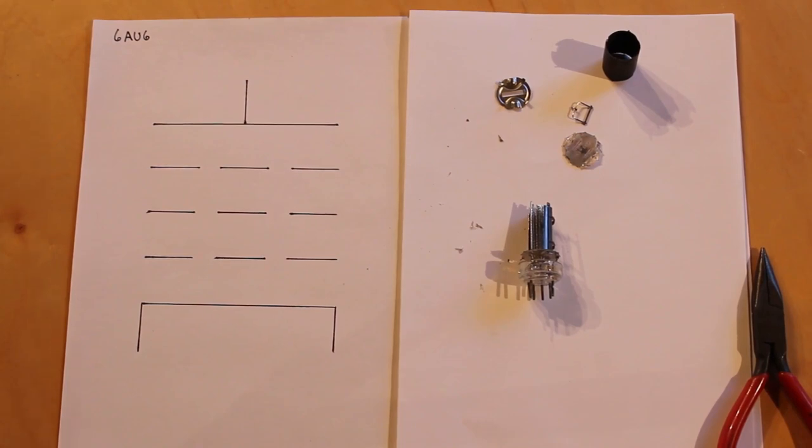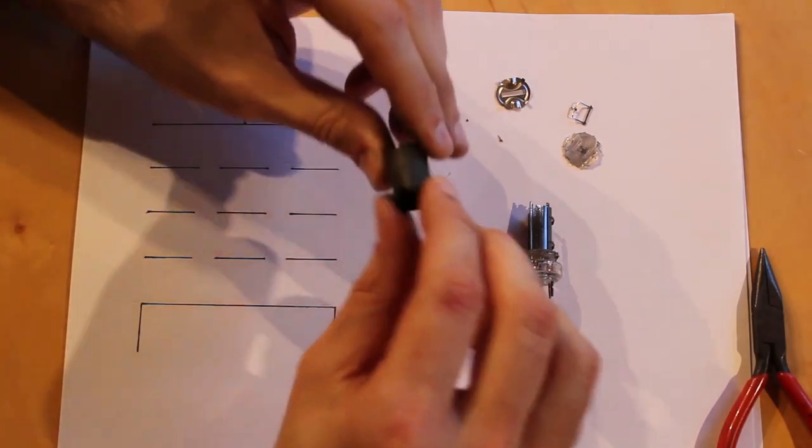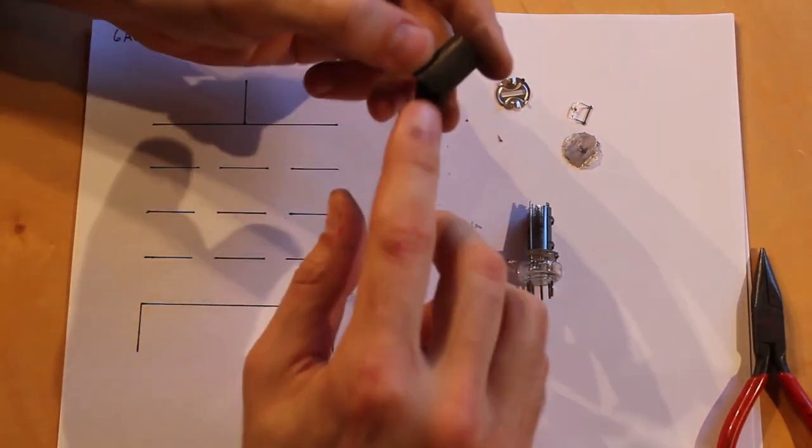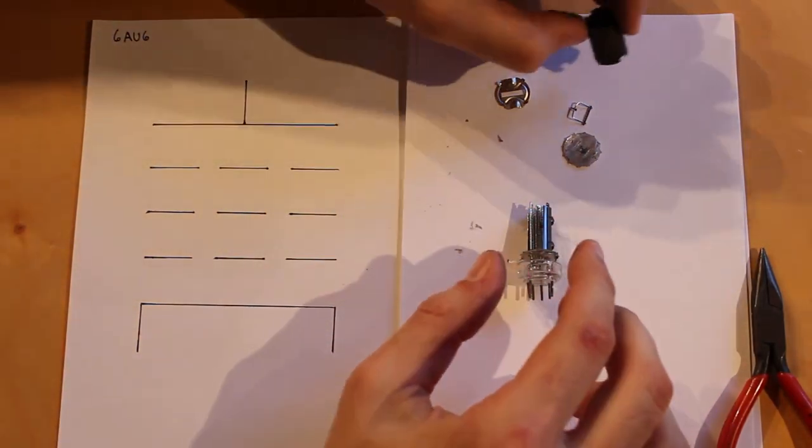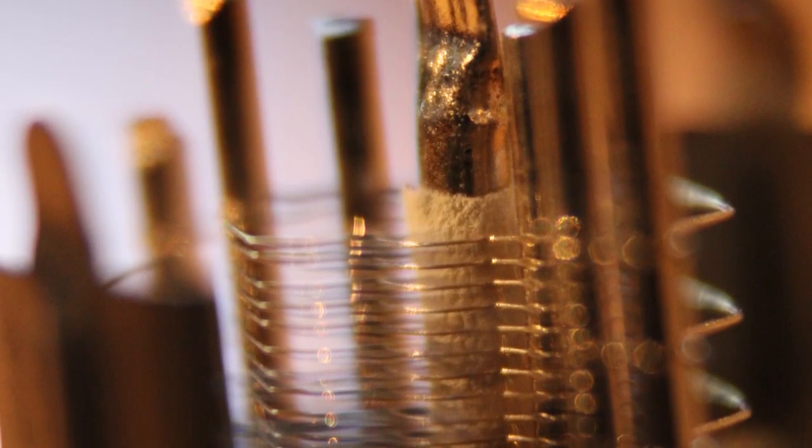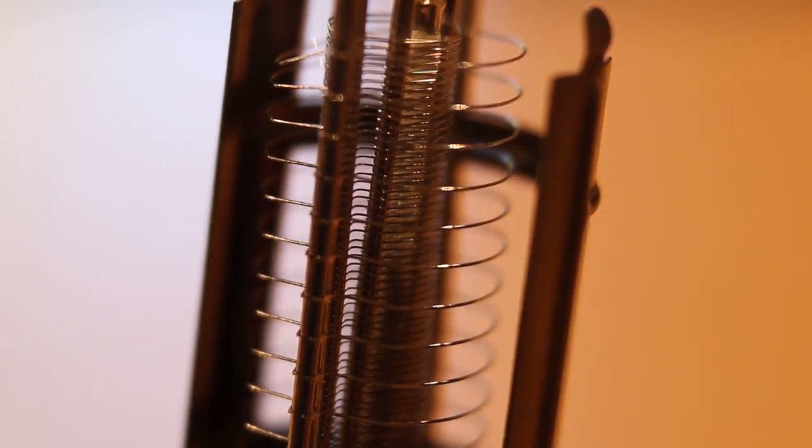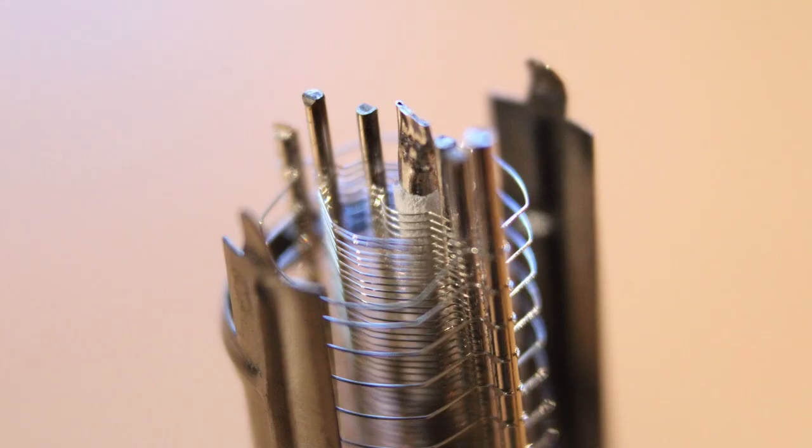All right well that one came apart really easily. You can see that the plate around the outside here actually just needed two quick little trims and then it slipped right off and you can just clearly see all three grids in there. The manufacturing capability on this is just mind-boggling. It is just phenomenal.